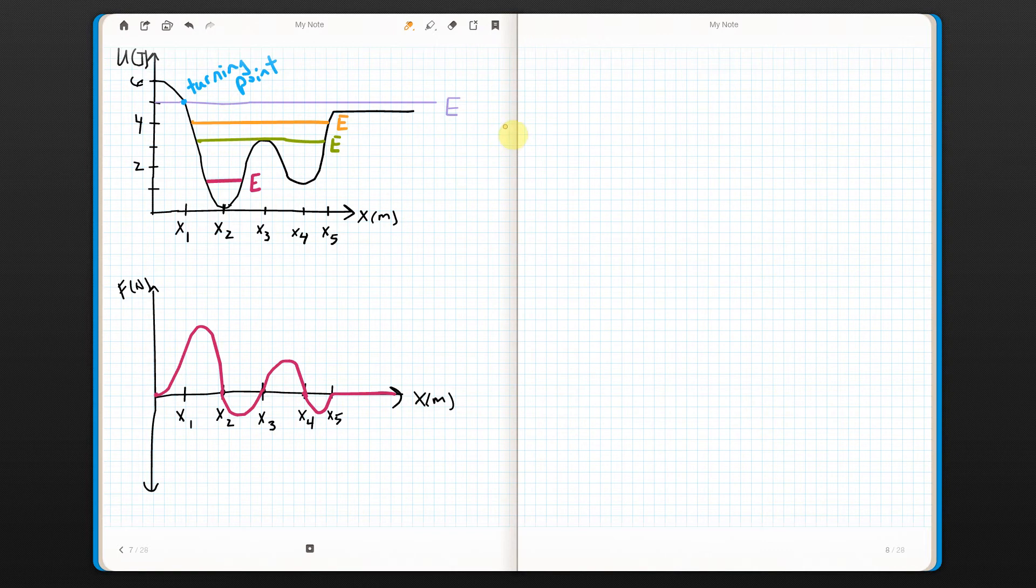With the orange, now the turning point is no longer at x1. Now the turning point is somewhere between x1 and x2. It's right here.